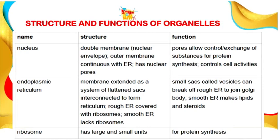The nucleus has a double membrane with an outer membrane and pores which allow control and exchange of substances for protein synthesis, which we shall look at further in another class. The endoplasmic reticulum comes in two forms: rough ER and smooth ER. Small sacs called vesicles can break off rough ER to join Golgi bodies, while smooth ER makes lipids and steroids. Ribosomes have large and small subunits and are used for protein synthesis; they are found in both prokaryotic and eukaryotic cells.